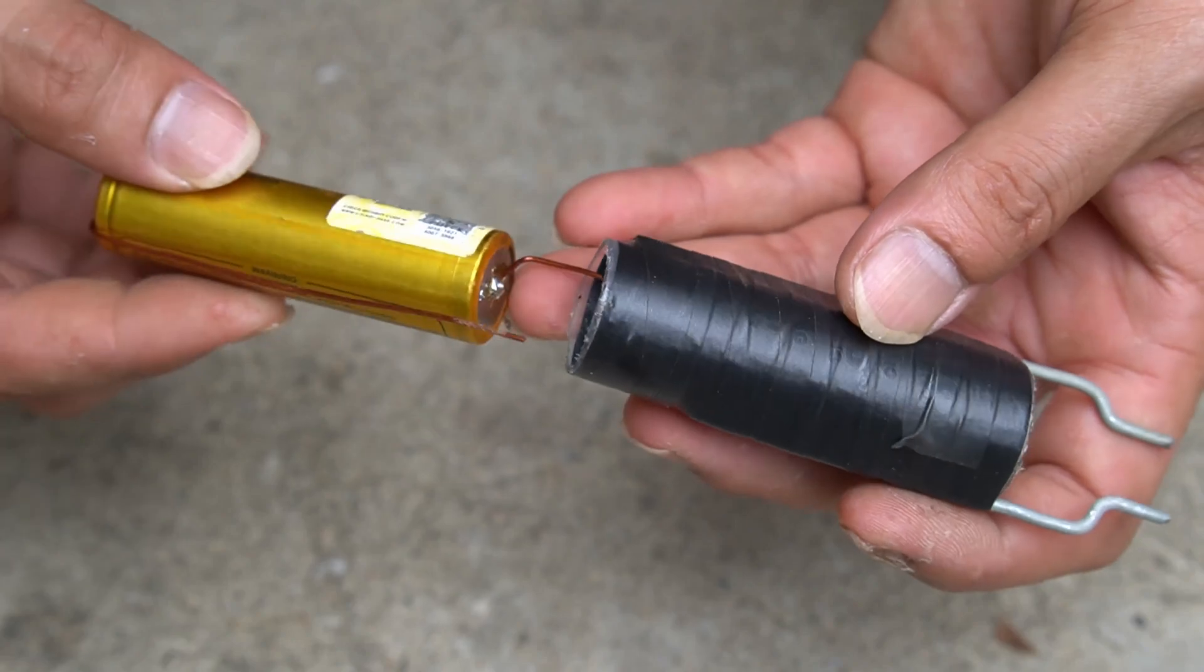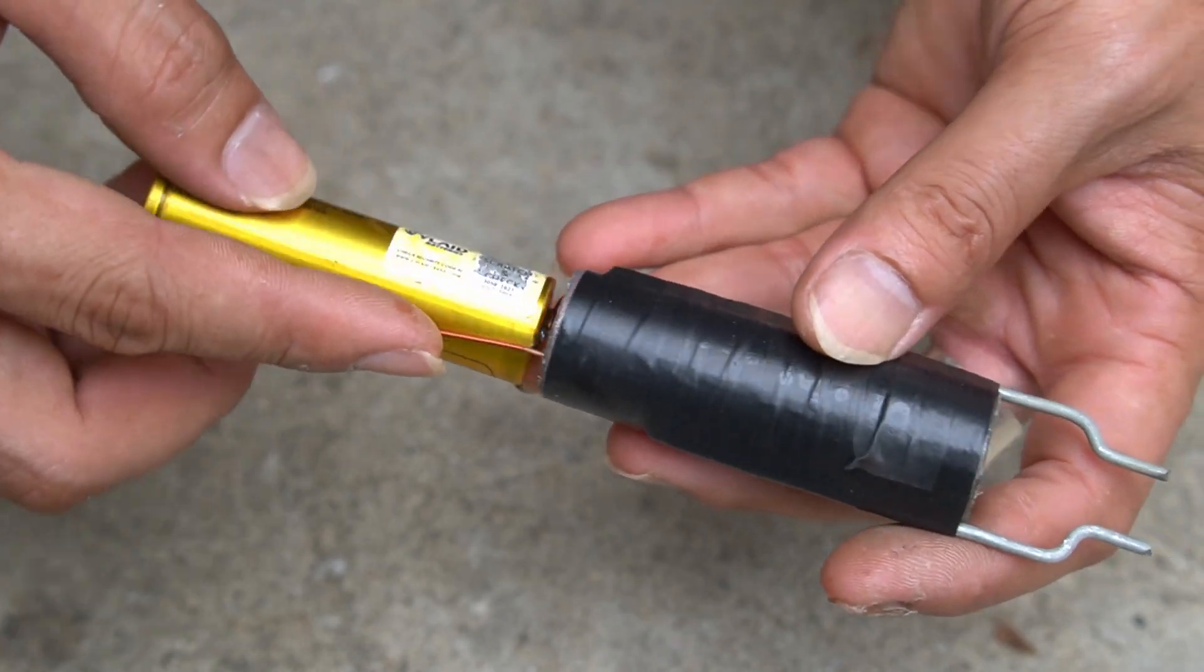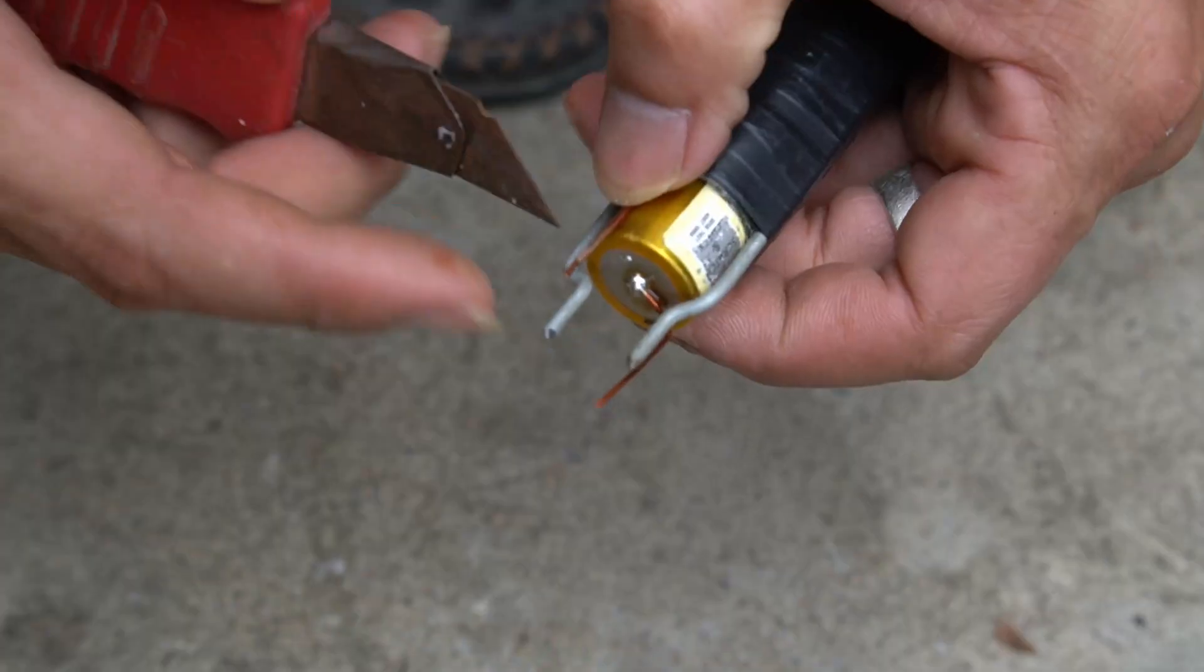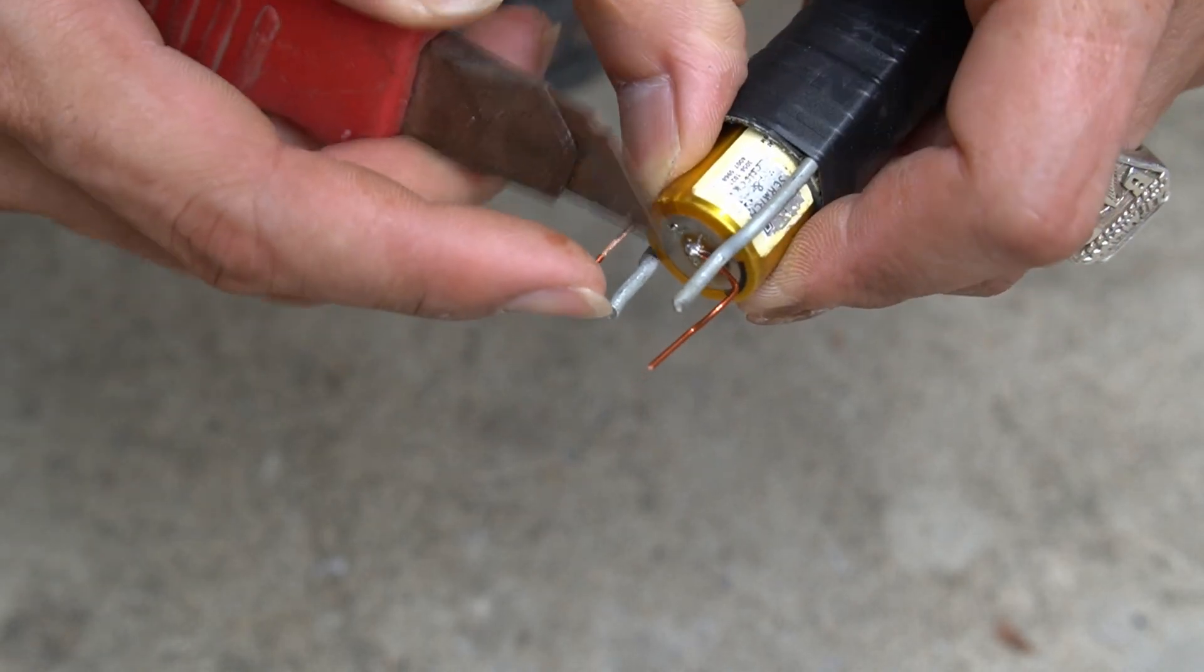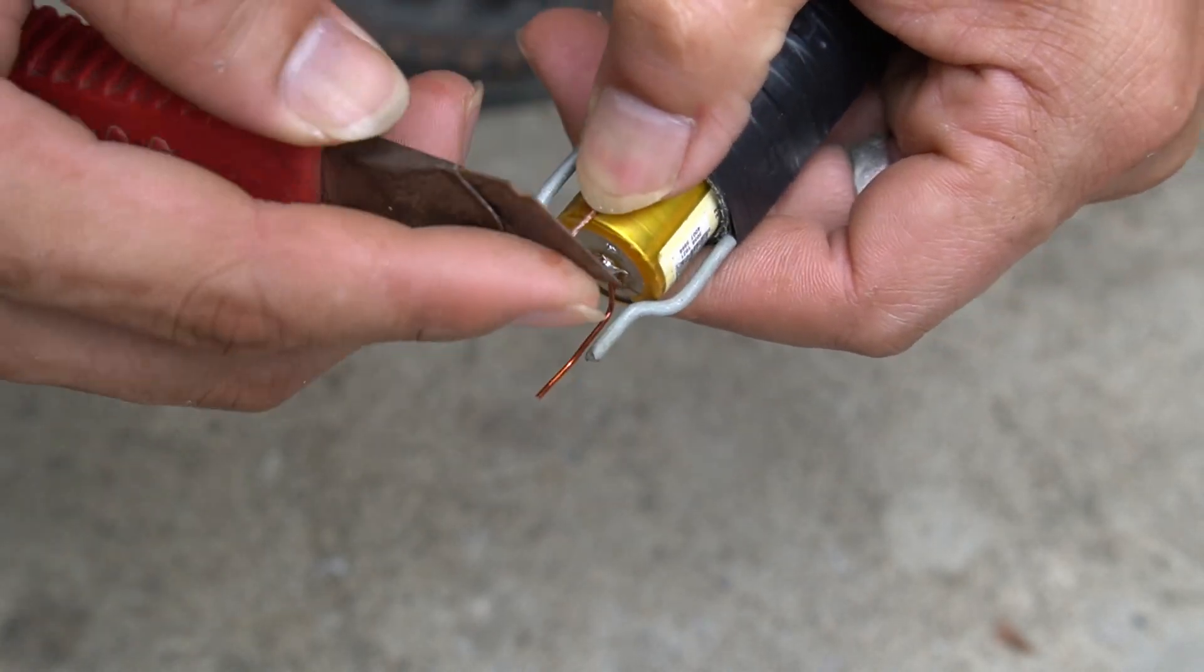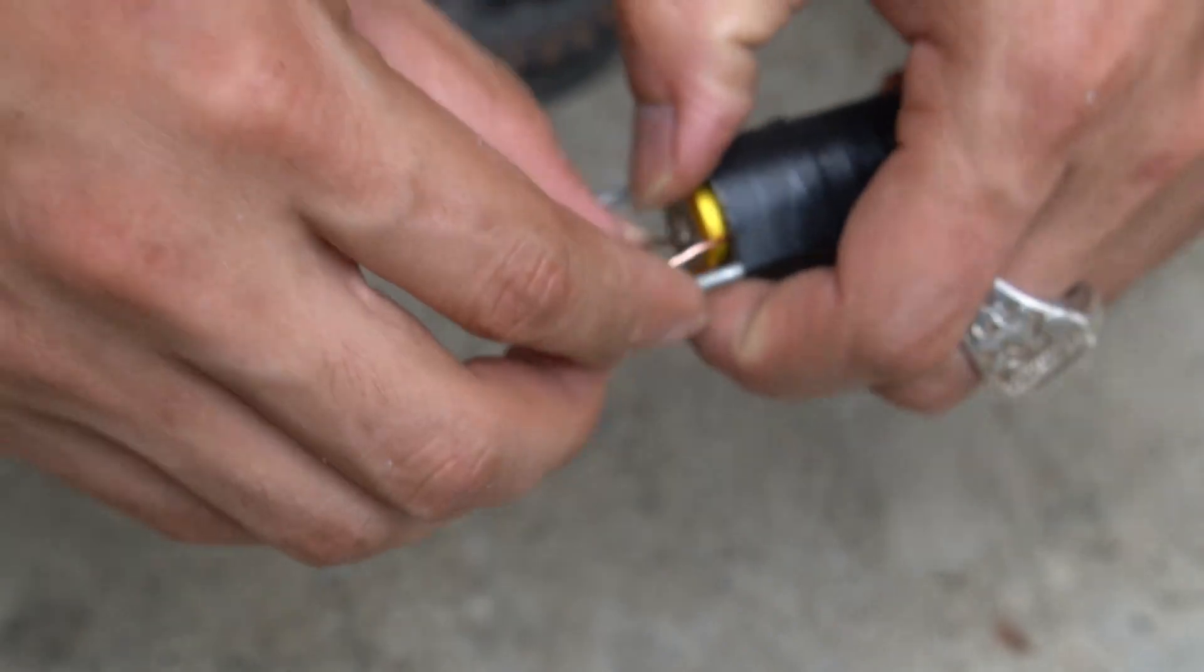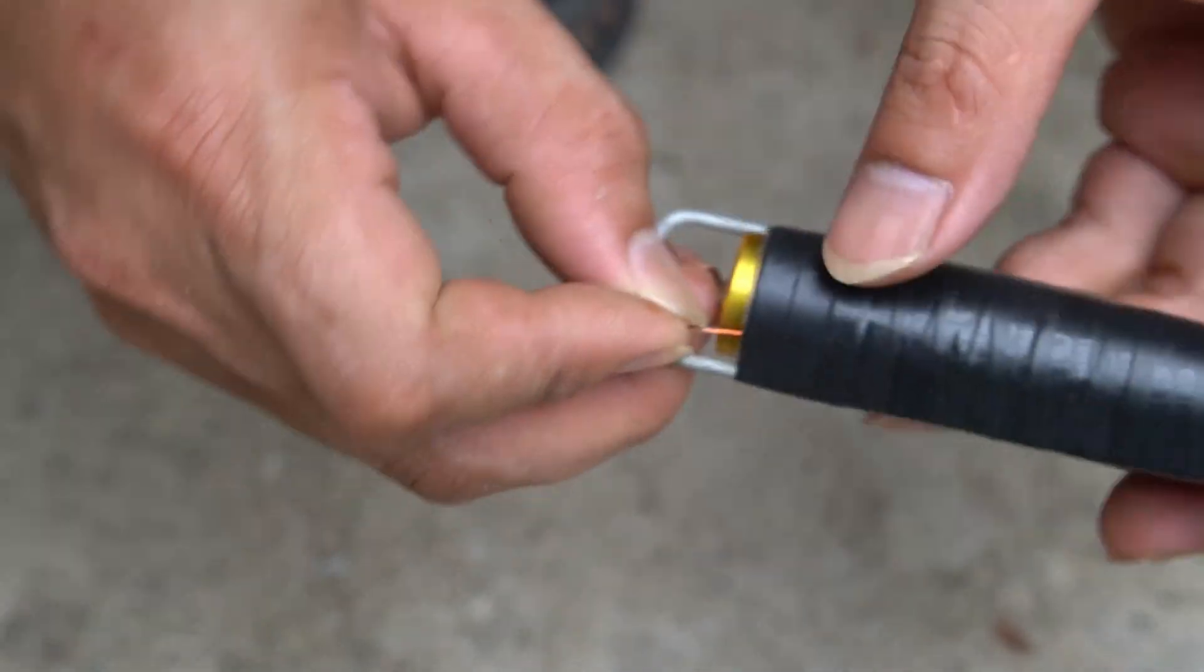I put the battery inside the syringe. Use a razor blade to scrape off the insulation from both ends of the copper wire.